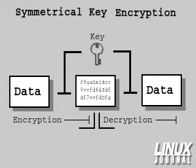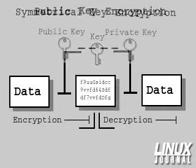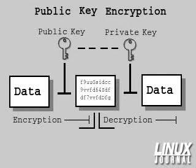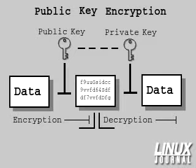Symmetrical key encryption is simple and fast, but there is an added danger in key distribution. It is dangerous to send the key to people who need it because if the key is intercepted, the data is vulnerable and no longer secure. Public key encryption is more complex and about a thousand times slower than symmetrical encryption, but it has the benefit that a different key is used to encrypt and decrypt the data. A key pair is created containing a private key and a public key. The public key is primarily for encryption, and the private key is primarily for decryption. The keys are mathematically related, but only through a very complex algorithm that is strong enough to make it infeasible to deduce one from the other. Because only the private key can decrypt data encrypted with the public key, it is safe to distribute the public key freely. This solves the problem of key distribution associated with symmetrical key encryption.